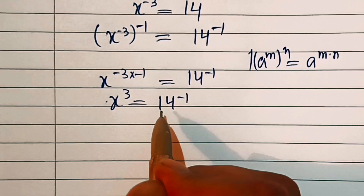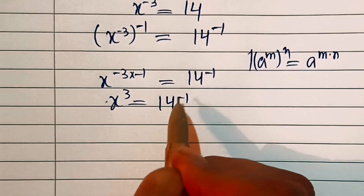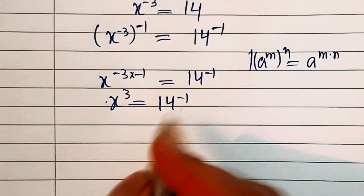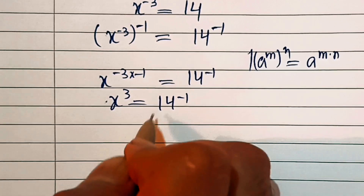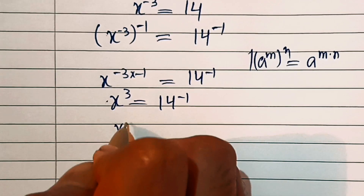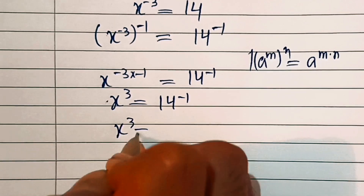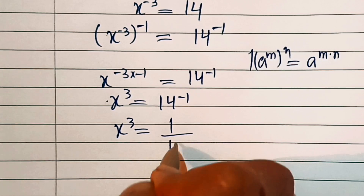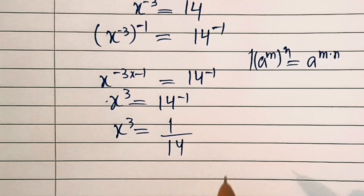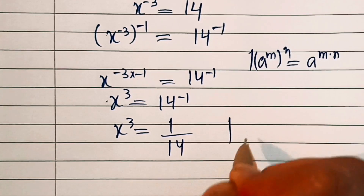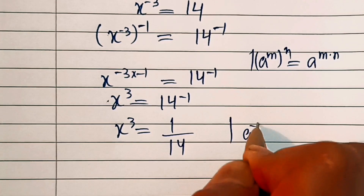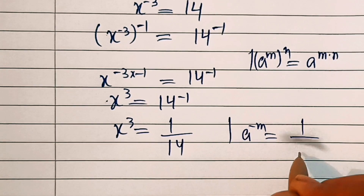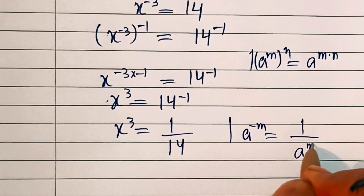That gives us x cubed equal to 14 power minus 1. Now we have 14 power minus 1, and we can invert the base — that is 14 — so this will look like x cubed equal to 1 by 14, as we know a power minus m is equal to 1 by a power m.